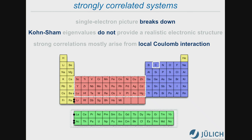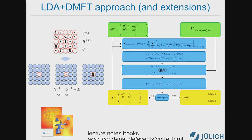Typically our compounds involve atoms with partially filled D, F, or sometimes P shells. Here I will focus on materials which involve atoms in these rows, in particular ruthenates and perhaps, if I have time, rhodates. The method which became the state-of-the-art approach for this system is the LDA plus DMFT method, which starts from Kohn-Sham eigenvalues to build Hamiltonians augmented by a local Coulomb interaction — so generalized Hubbard models.